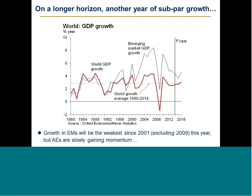Putting this picture into a longer horizon: we believe that world GDP will be below average this year again, then next year should pick up gradually. Most importantly, growth in the emerging markets world will be the weakest since 2001 if we exclude the 2009 recession, which is certainly worrying. Global GDP will be more balanced from now on, with less participation from emerging markets and a bigger share from advanced economies.